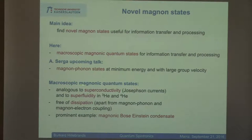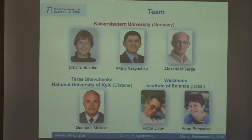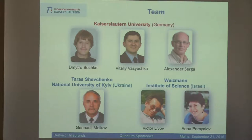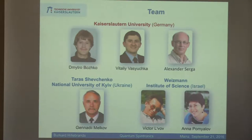The most prominent example of a magnonic macroscopic quantum state is a magnonic Bose-Einstein condensate, so I will spend a few minutes for the younger people among you to discuss what is going on. But before I start, I have to mention the people in my group who have done this. In particular Dima Boschko, a PhD student just writing up his thesis; Vitaly Vazushka; Alexander Sarga, who is here in the front row. We need a lot of theoretical support here — it's a field which only progresses by combining experiments with very good theory. In particular I would like to mention Kennedy Malkoff from Kiev University and Viktor Al-Wolf and his fiancée Anna Pomialov from the Weizmann Institute in Israel. The theory I'm showing is done by Viktor Al-Wolf.